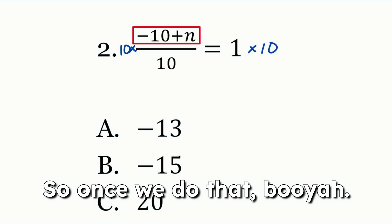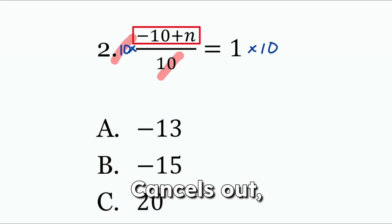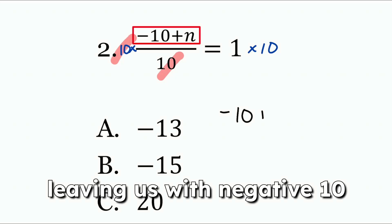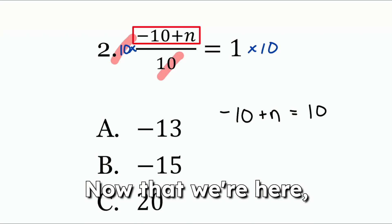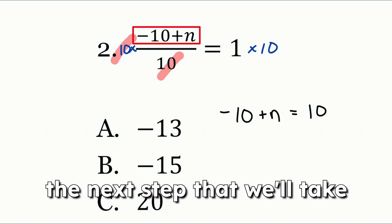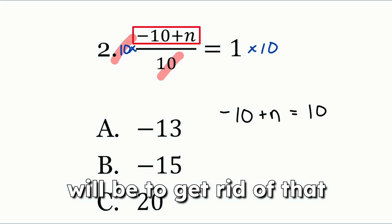So once we do that, booyah cancels out, leaving us with negative 10 plus N equals 1 times 10, which is 10.